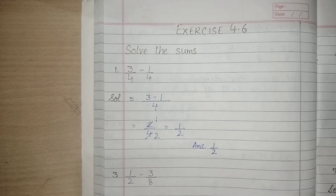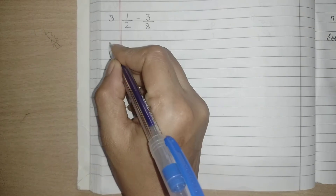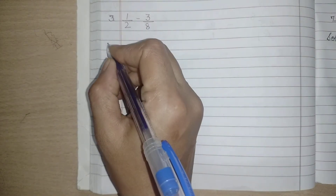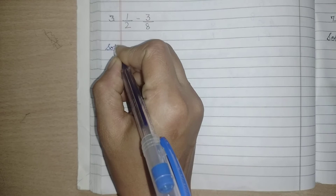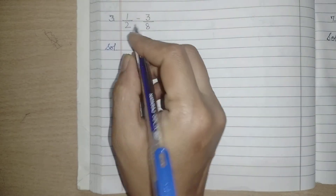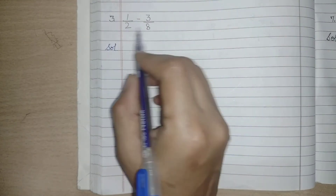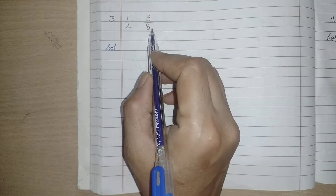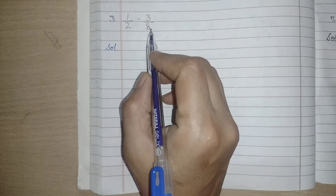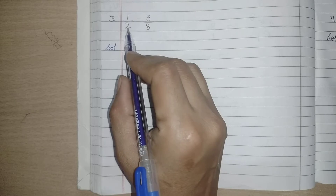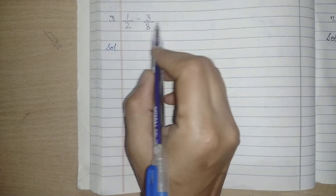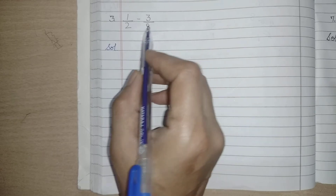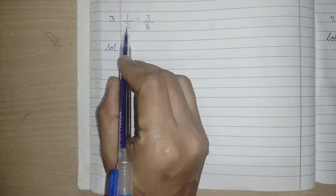Let's see the next part. Here we have 1 upon 2 minus 3 upon 8. This is an unlike fraction — ismein denominators humare same nahi hain. To jab humare paas denominators same nahi hote hain, in that case the first step is we have to make the denominators same. Aur hum denominators same kaise banate hain? By taking LCM of the denominators.